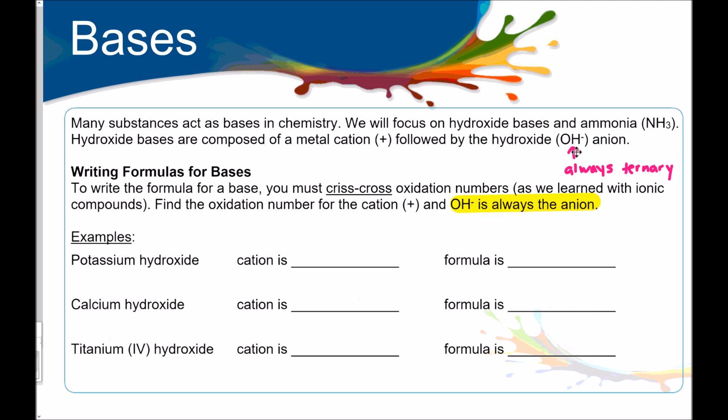To write the formula for a base, you just crisscross the oxidation numbers. As we learned with ionic compounds, find the oxidation number for the cation and the hydroxide ion will always be the anion. Potassium hydroxide. Our cation is potassium with a plus one charge. Our anion is hydroxide with a negative one charge. So, we've got plus one, negative one. Smush them together, KOH. Calcium hydroxide. Calcium is plus two. Hydroxide is minus one. So, you do have to crisscross these. Ca in parentheses, OH with the two outside.